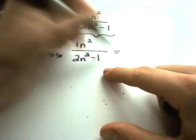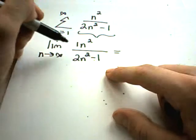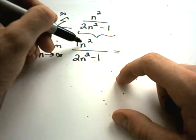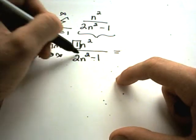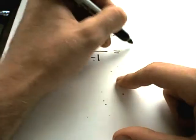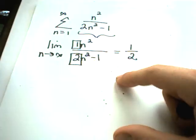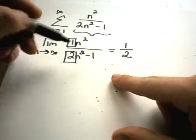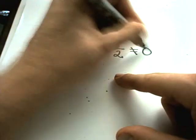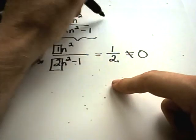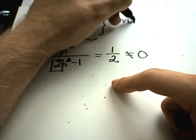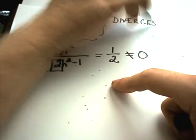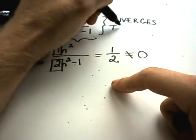And notice if you take the limit of this, the limit as n goes to infinity of n squared over 2n squared minus 1. Well, this limit, you can either divide everything through by n squared. There's that little trick if the highest power on top is the same as the highest power on the bottom. We can just take the ratio of their coefficients and that will be my answer. Well, since the limit of this does not equal 0, we can conclude that this original series diverges by the test for divergence.